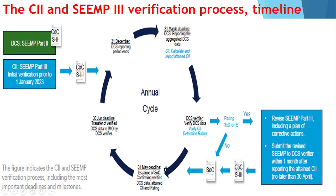The administration needs to verify the data before 31st May. Now, during verification, if the administration sees that for the next 3 consecutive years you are getting a rating of D, or you are getting a rating of E based on your attained CII, they will say you need to submit a revised SEEMP plan.